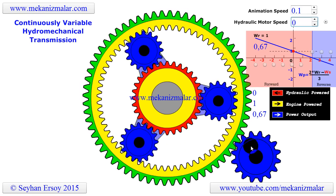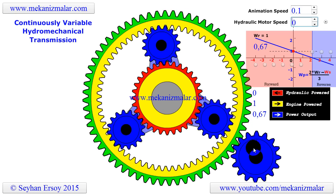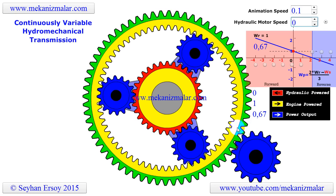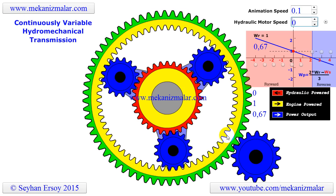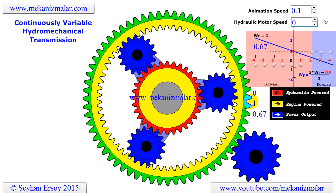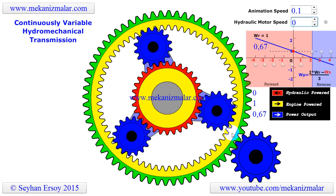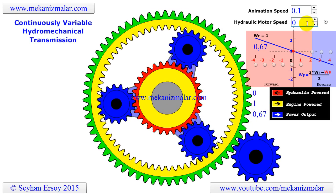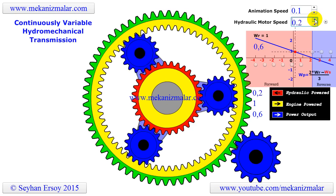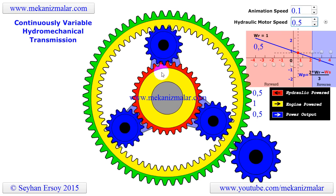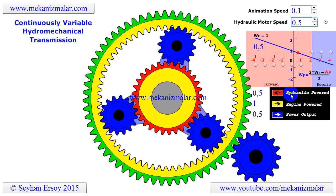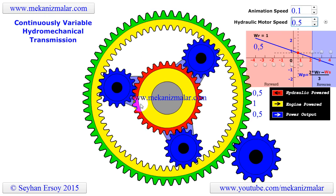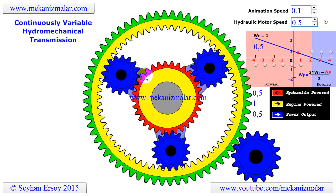Assume that a diesel engine rotates the large blue gear with constant angular velocity. In turn, the blue gear rotates the yellow ring gear of the planetary gear system with a constant angular speed of 1. The red sun gear of the planetary gear system is powered by a hydrostatic transmission system not shown here. The hydrostatic transmission makes the sun gear rotate in either direction at different speeds.